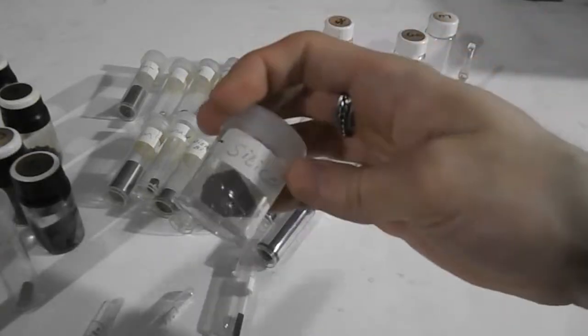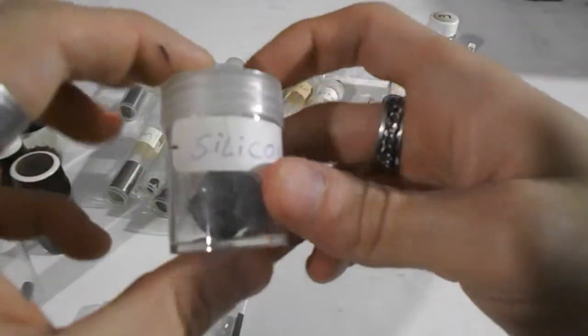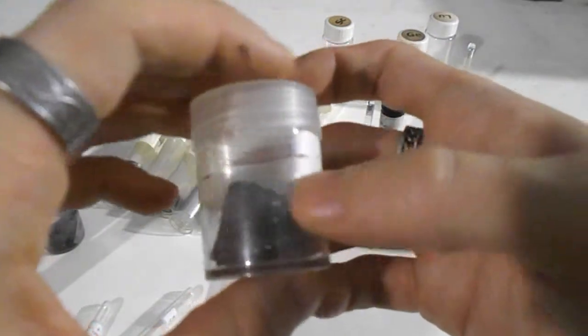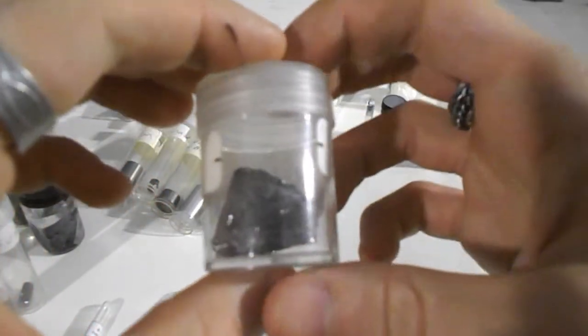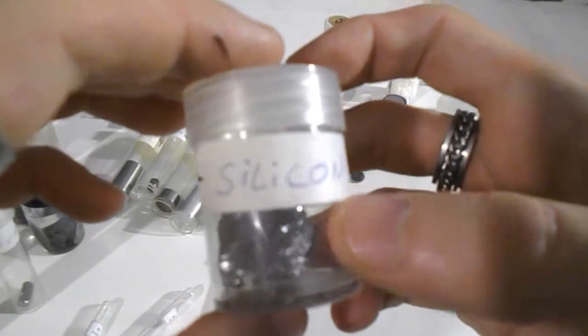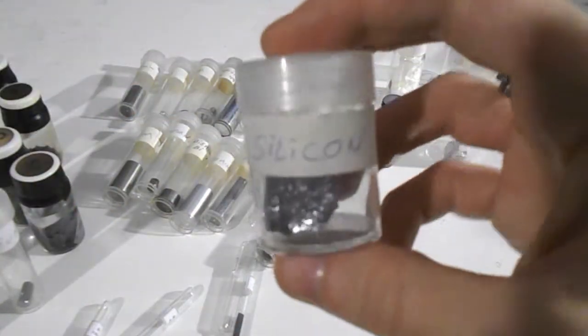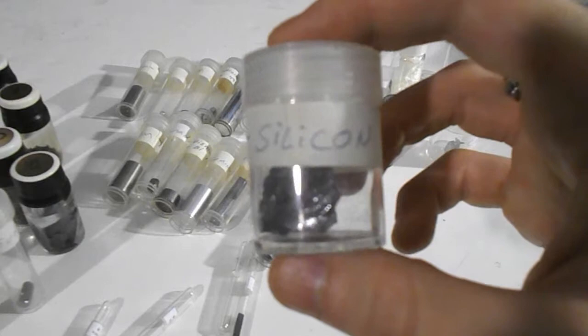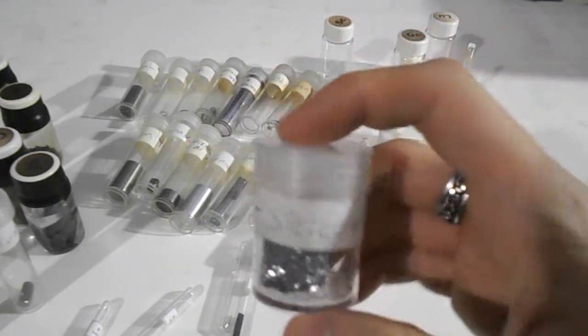Here we have silicon. In fact, making this video would not be possible without this element. This is crystalline silicon, number 14 on the periodic table. It's used to make all kinds of computer chips.